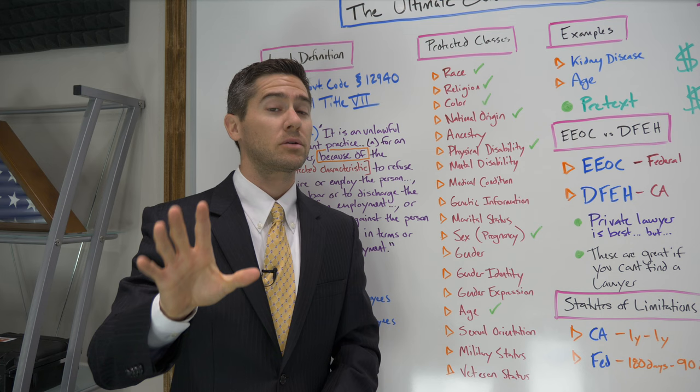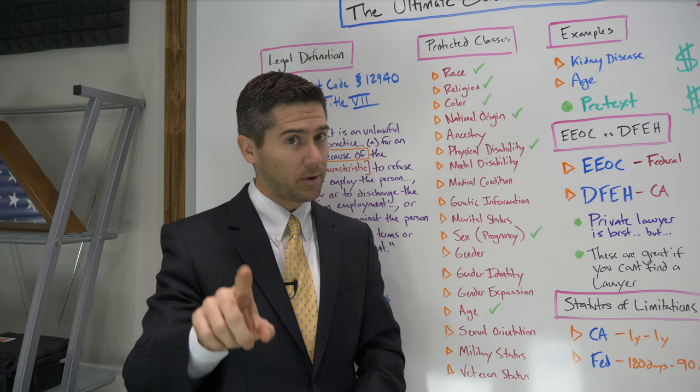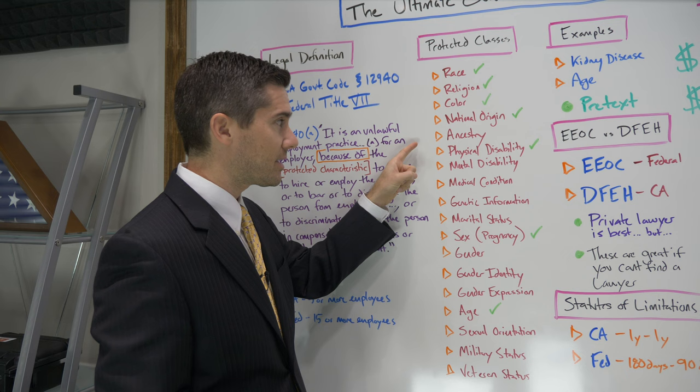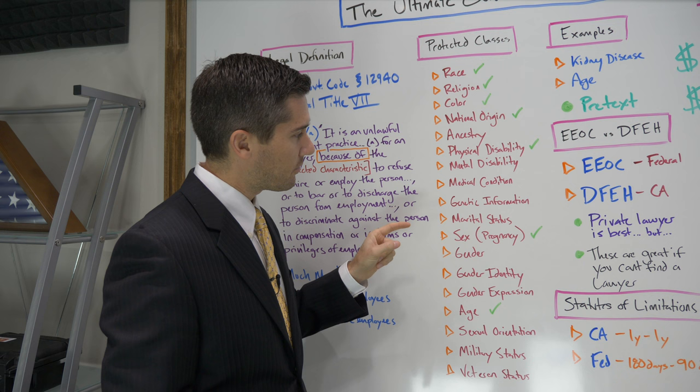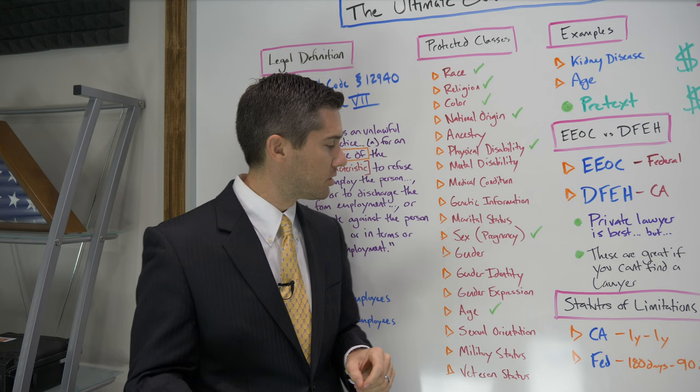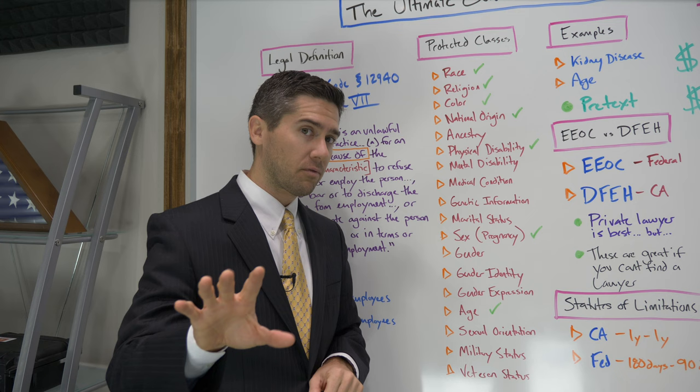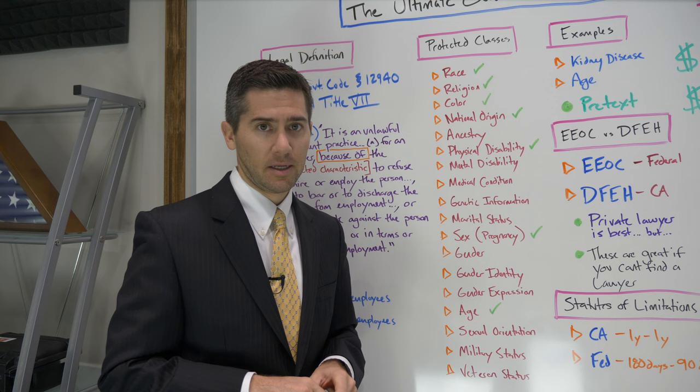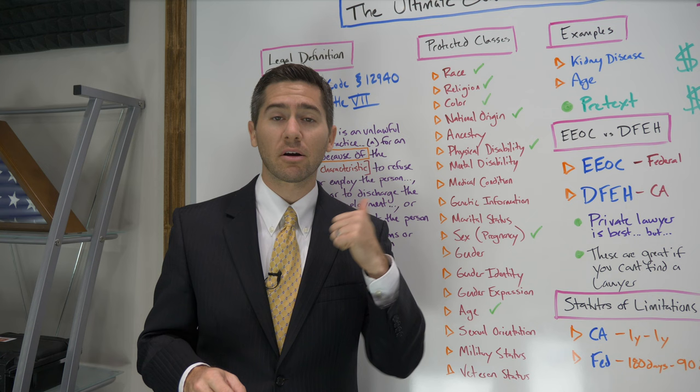So what are the protected classes or categories in California? I'm going to read them to you: race, religion, color, national origin, ancestry, physical disability, mental disability, medical condition, genetic information, marital status, sex (which also includes pregnancy and related medical conditions), gender, gender identity, gender expression, age if you're over 40, sexual orientation, and military and veteran status. This means that if your employer is doing something bad to you because of one of these characteristics, you may be facing unlawful discrimination.